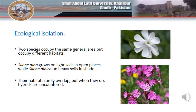If species are established in the same geographic region, they may be isolated by ecological mechanisms, where species occupy different ecological habitats, making it difficult for them to interbreed. Different plant species may occur on different soils, drainage profiles, exposures, or at different altitudes. This type of isolation, although frequent and widespread, is often incomplete, as different forms may come together in transitional habitats. Silene alba grows on light soils in open places, whereas Silene dioica grows on heavy soils in shade, and the species can produce hybrids if their habitats overlap.